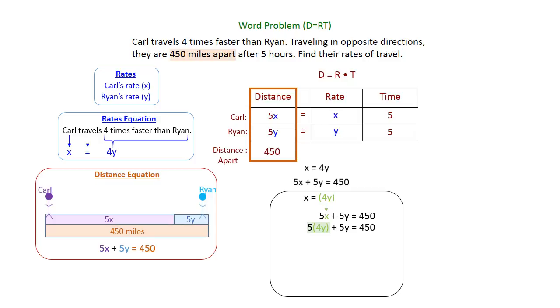You'll multiply that 5 times 4. This is not distributing, it's just multiplying. So it's 20Y + 5Y = 450. Then look at your left-hand side and notice you've got some like terms to put together. 20 + 5 is 25Y.